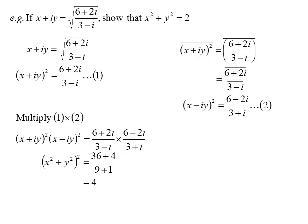We get 36 plus 4 on the top of the fraction, 9 plus 1 on the bottom of the fraction, which is 4. That's X squared plus Y squared squared, therefore X squared plus Y squared is 2.